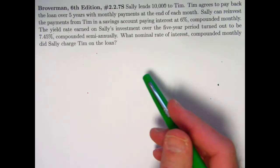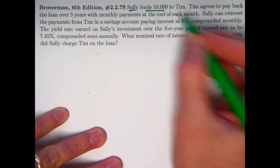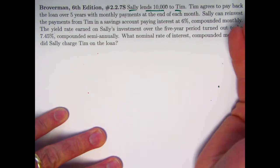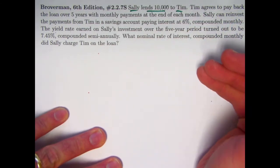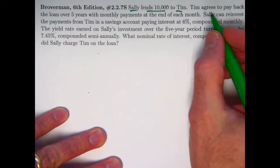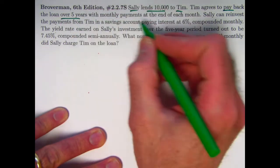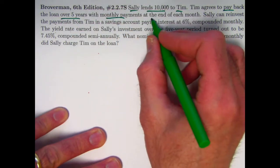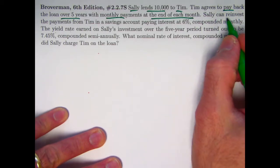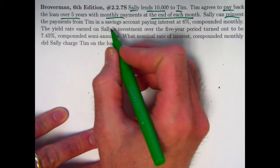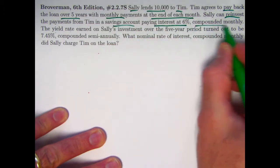Here's the problem statement. Sally is doing the investing — she's lending $10,000 to Tim and will get a return on the investment. Tim is going to pay her back with interest, and she's also going to reinvest Tim's payments. He agrees to pay back the loan over five years with monthly payments at the end of each month, so this is going to be an annuity immediate.